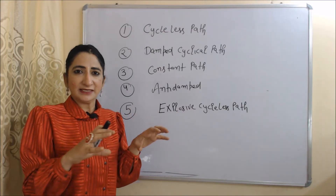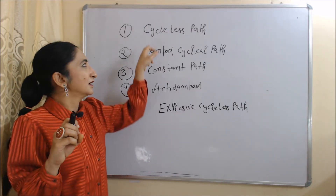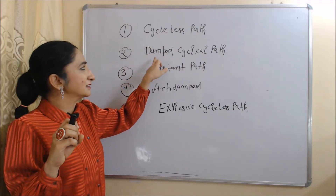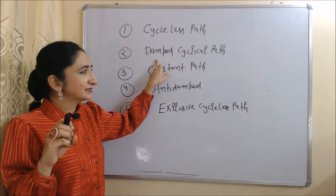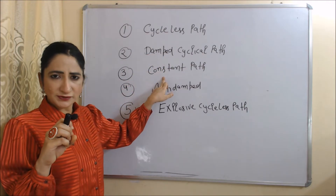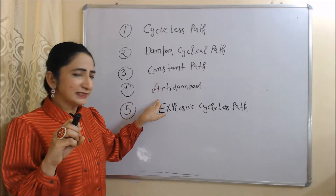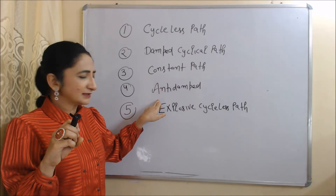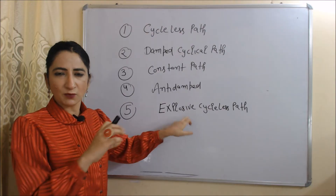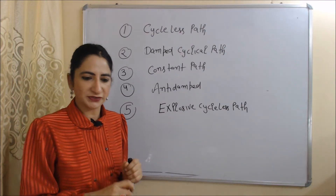According to this theory, there are mainly 5 paths of business cycles: first, the cycleless path; second, the damped cyclical path; third, the constant path; fourth, the anti-damped path; and last, the explosive cycleless path. We will discuss each one by one.